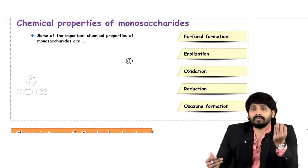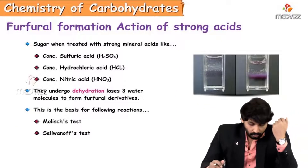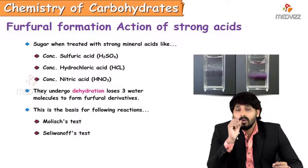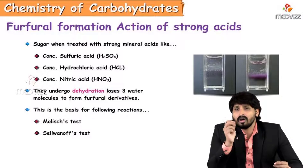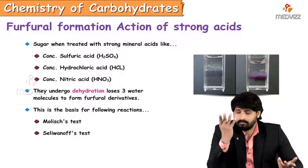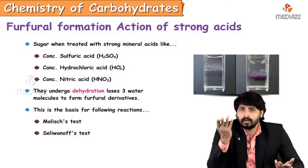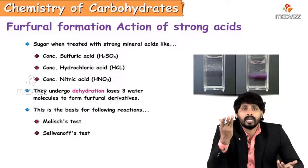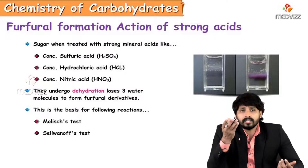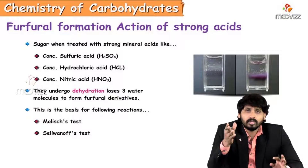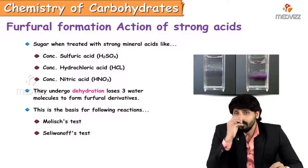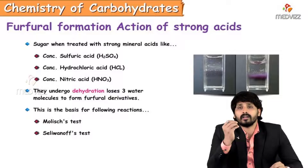The first reaction is furfural formation. When glucose or any other monosaccharide is treated with strong mineral acids — such as H₂SO₄, HCl, and nitric acid — especially in concentrated form, carbohydrates undergo dehydration in the presence of these mineral acids.